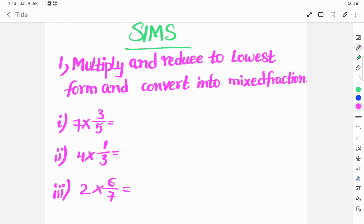7 into 3 by 5 is equal to, 7 threes are 21, 21 by 5. The denominator is 5. Now convert into mixed fraction.